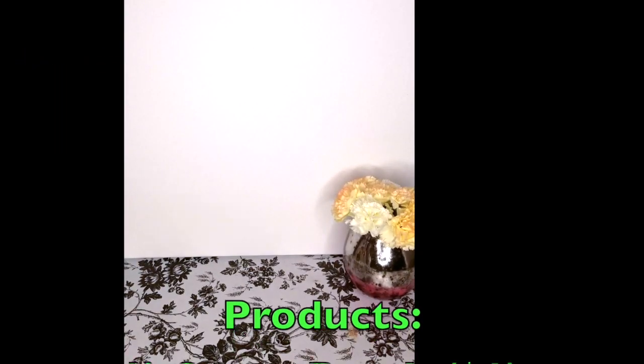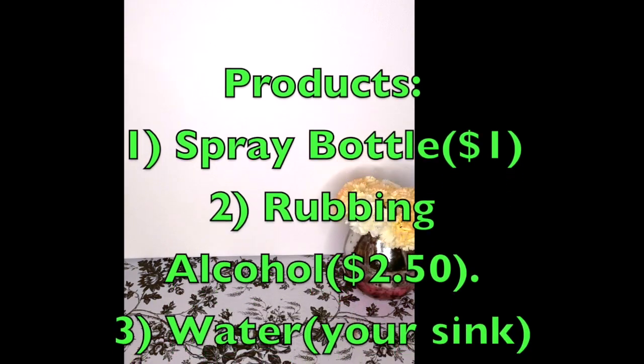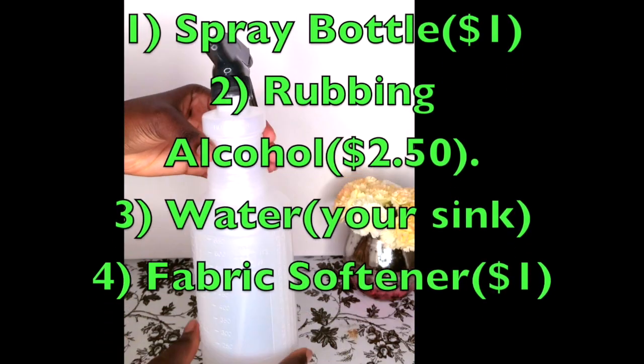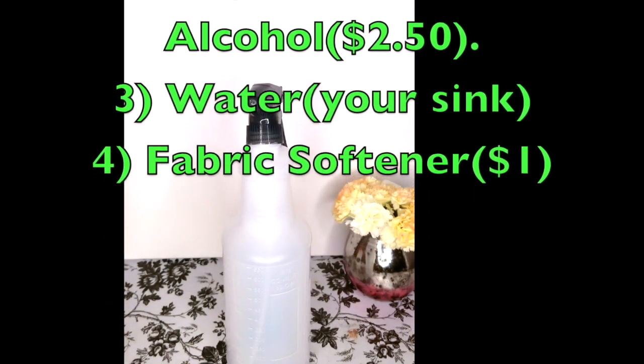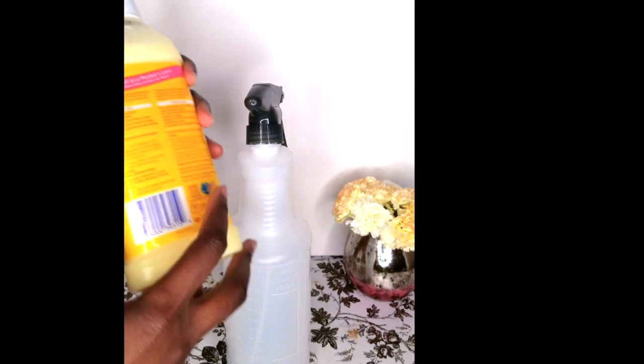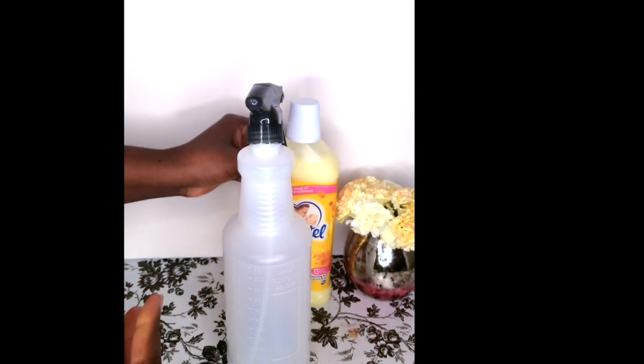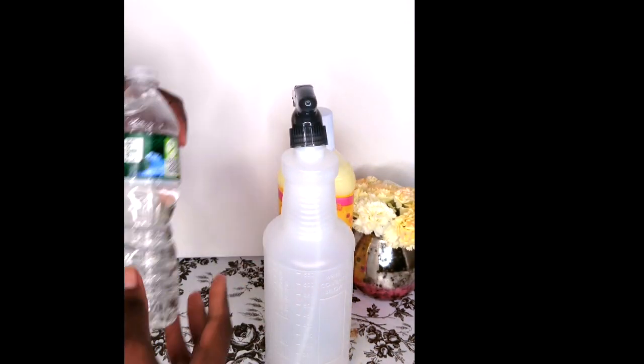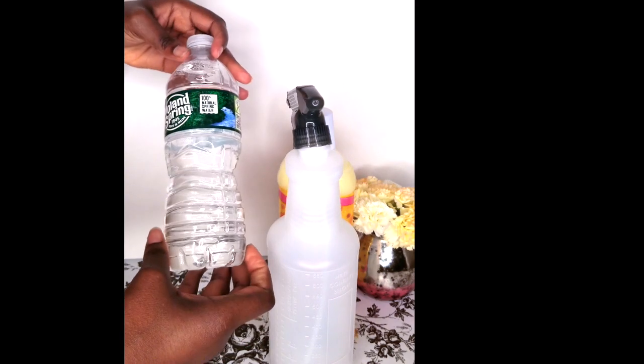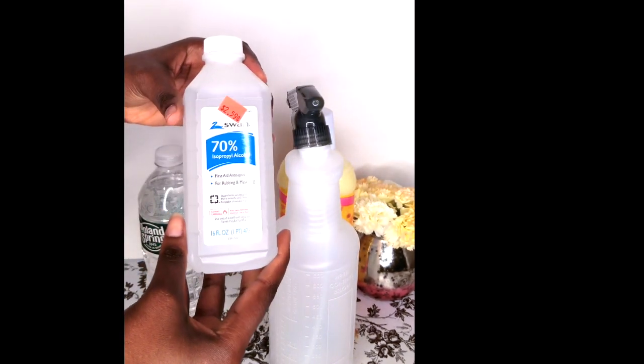Hi everyone, welcome to my channel, this is Miss Women here. Today I'm going to share with you how to make your own disinfectant spray for your couch, maybe your carpets as well. The products you will need are fabric softener, rubbing alcohol, a spray bottle, and some water from your kitchen sink.